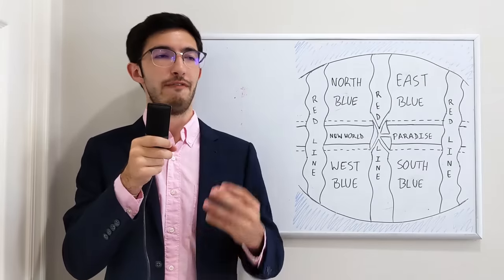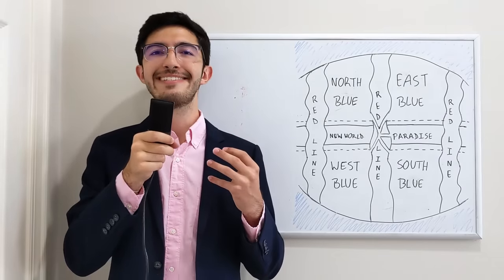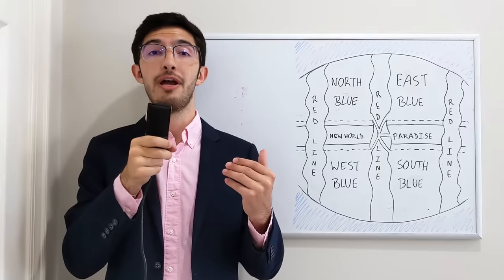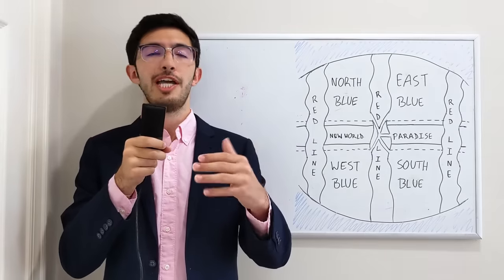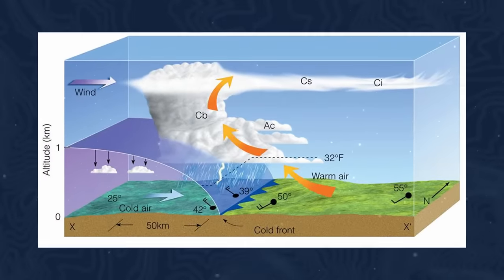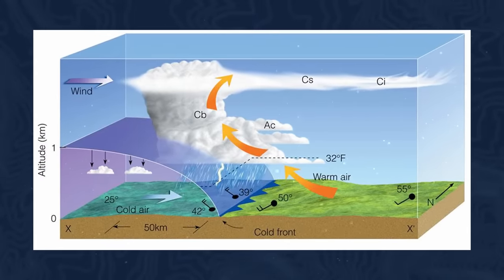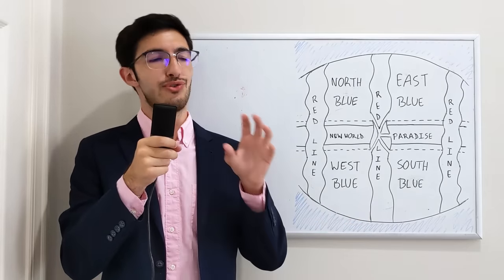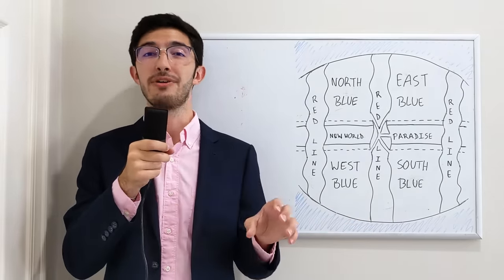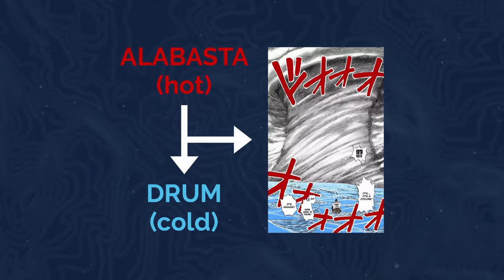Now, in these fronts, because of the difference in temperature and density between different masses of air, once you cross from one end of the front to the other, you will experience a super drastic change in temperature and probably also precipitation. That is probably what's happening in the Grand Line, I would assume, because you have such drastic differences in climate between islands that the front between the different air masses belong to the different islands result in the super rapid changes in seafaring conditions across the Grand Line.